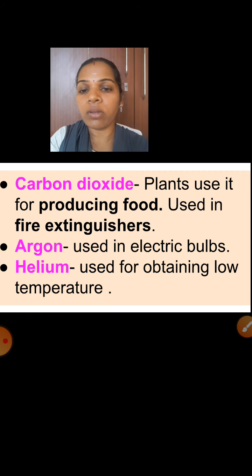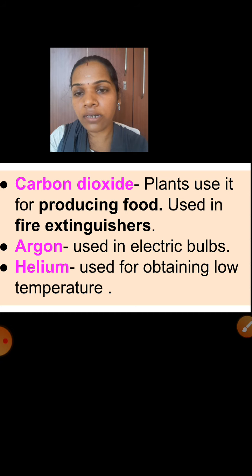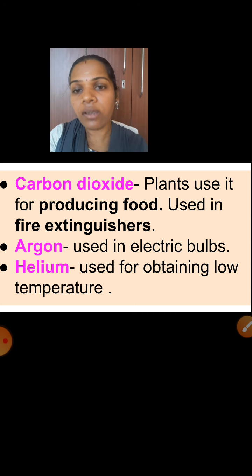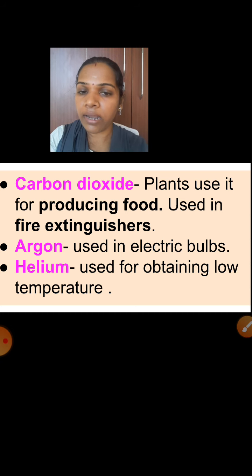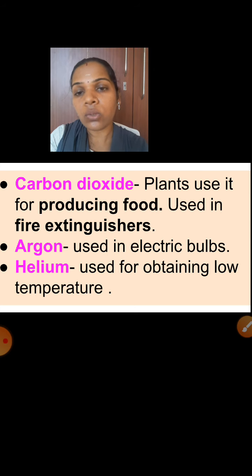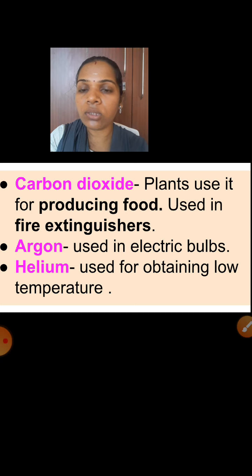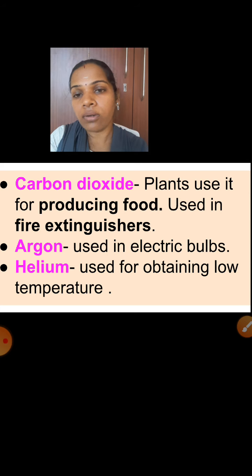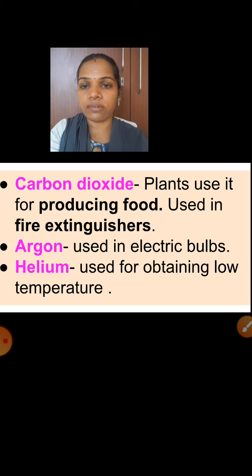Plants use carbon dioxide for producing food. In fifth standard you studied photosynthesis — plants produce their food with the help of chlorophyll, sunlight and carbon dioxide. So for the photosynthesis process, carbon dioxide is necessary. Carbon dioxide is also used in fire extinguishers — you might have seen fire extinguishers in schools, malls, and theatres.